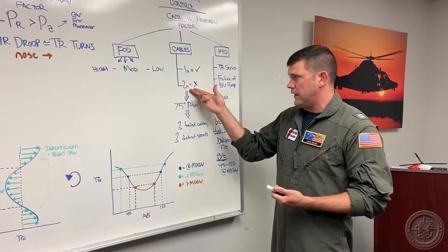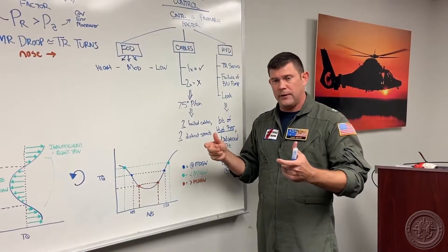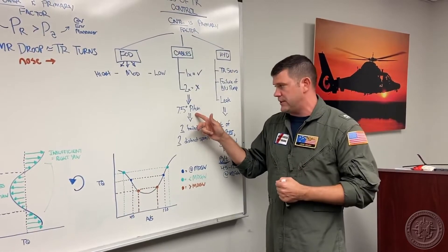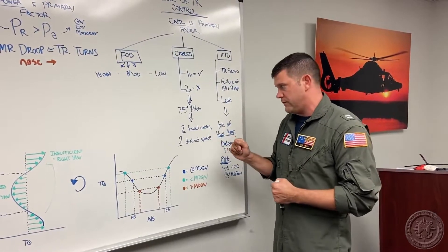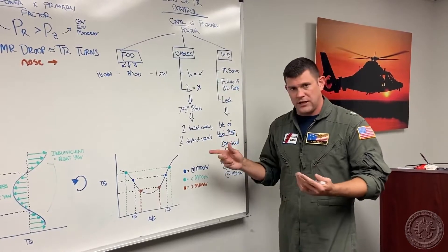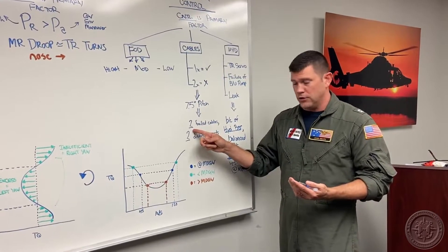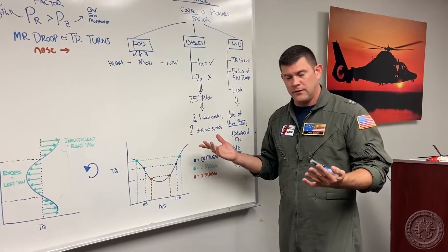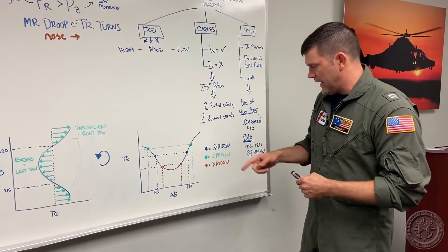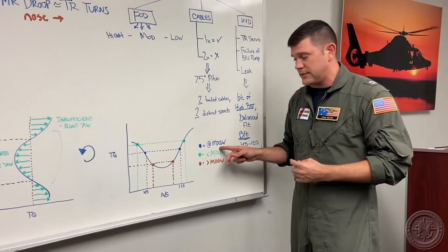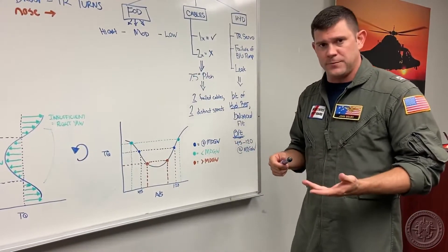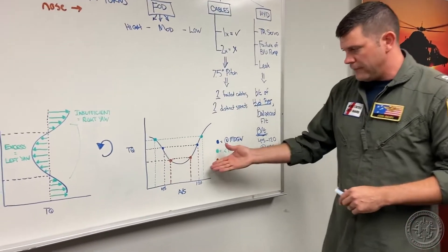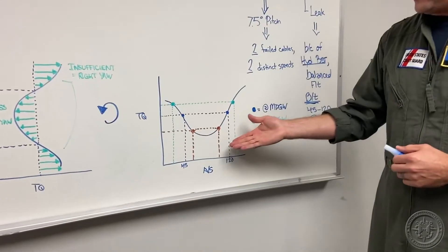What the helicopter is designed to do is to have two centering springs fix the pitch of the tail rotor system to seven and a half degrees of pitch. With two failed cables, you're looking for two distinct airspeeds. At the H60 mission design gross weight of 19,462 pounds, those airspeed targets are 45 and 120 knots. This graph will help us talk about how to fly the aircraft accordingly.